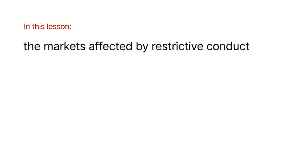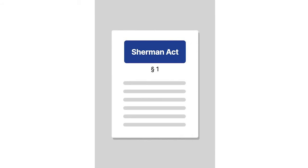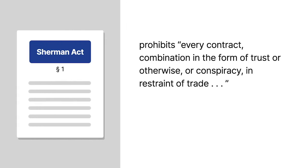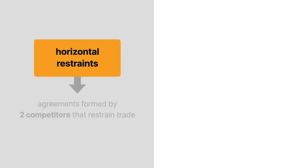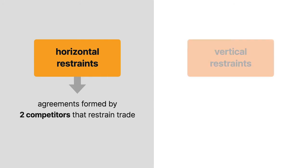In this lesson, we'll learn about the markets affected by restrictive conduct. Section 1 of the Sherman Act prohibits, quote, every contract, combination in the form of trust or otherwise, or conspiracy, in restraint of trade, unquote. This broad prohibition applies to dealings between competitors who, for example, collude to fix prices or to prevent the entry of new competitors into the market. These agreements are referred to as horizontal restraints.